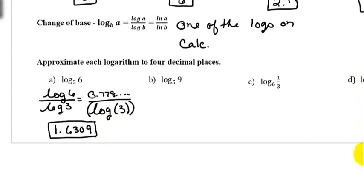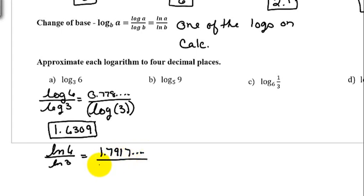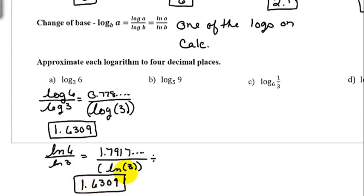You can also do this using the natural log: natural log of 6 divided by natural log of 3 gives exactly the same answer. Type ln(6), hit enter — I get 1.7917 and more digits — then divide by ln(3) in parentheses. Close both parentheses and hit enter; you get exactly the same result: 1.6309. You just need to use the same log for both numerator and denominator.